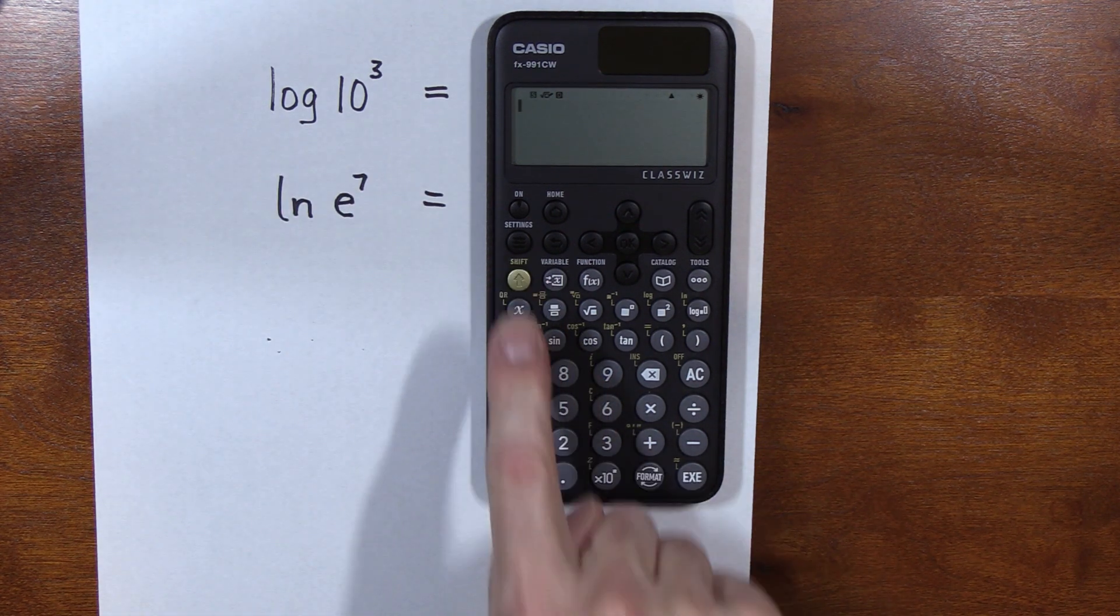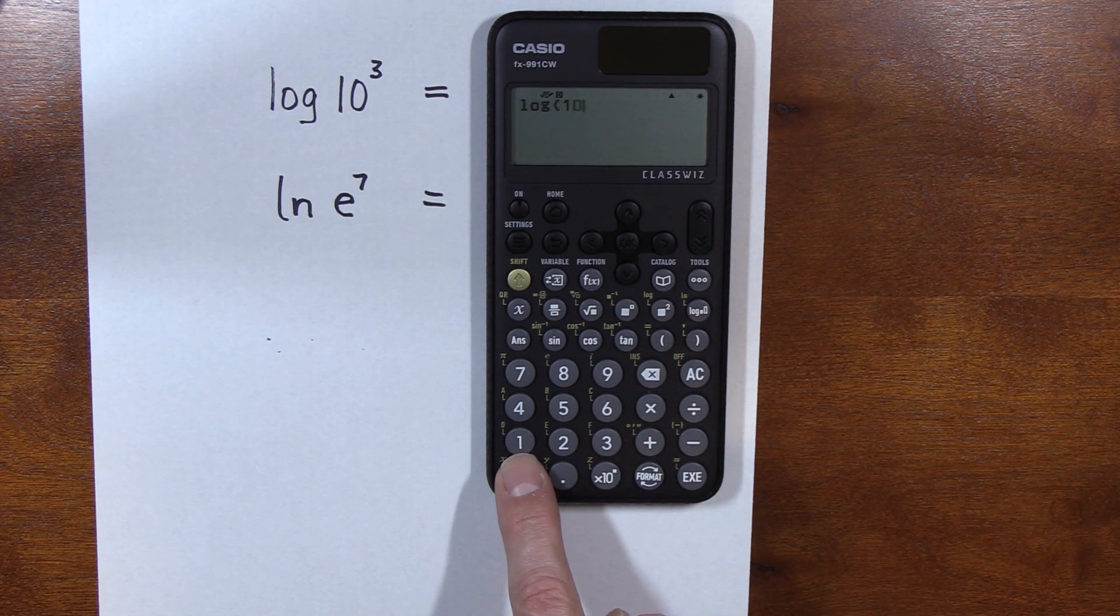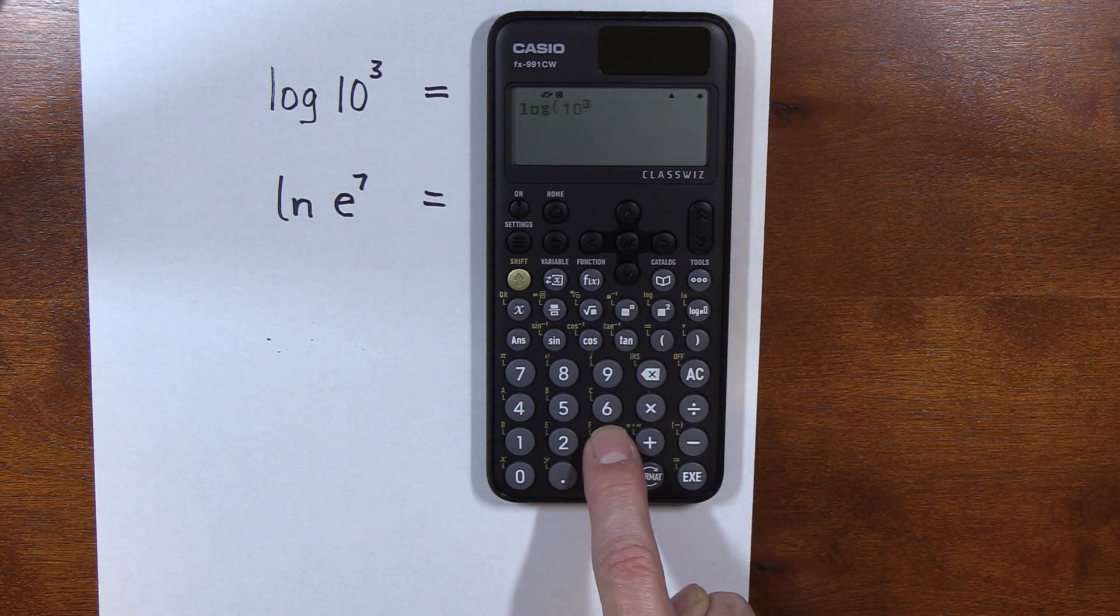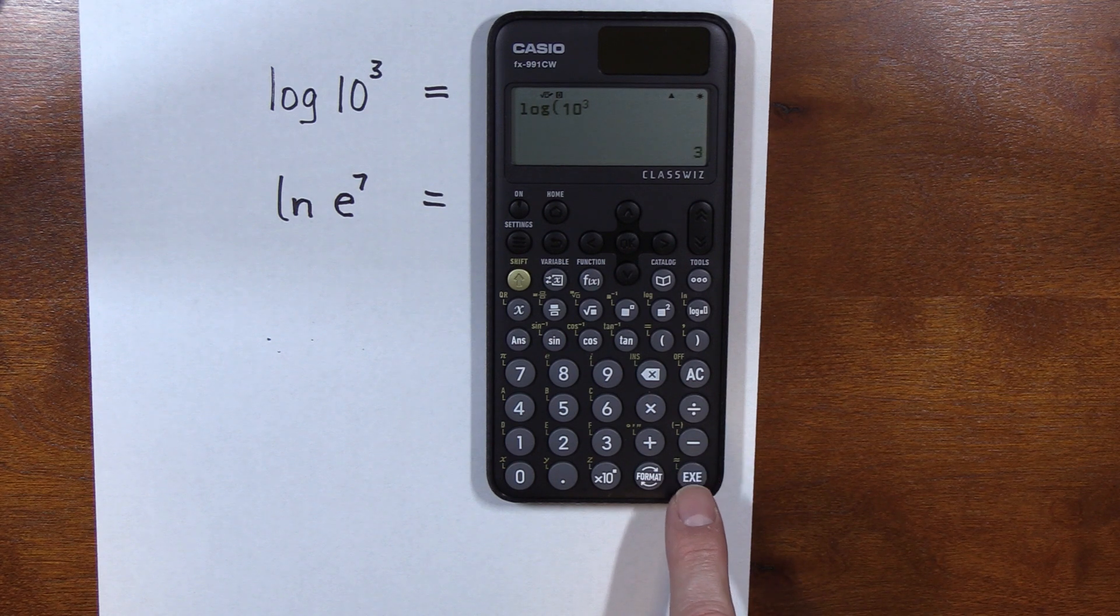We will do shift, hit the squared button. That gives me the log, which is log base 10 of 10. I'm going to hit this key here, to the third. I don't need to hit the parentheses, I could just hit equals, 3.